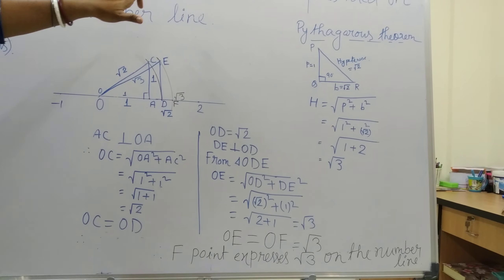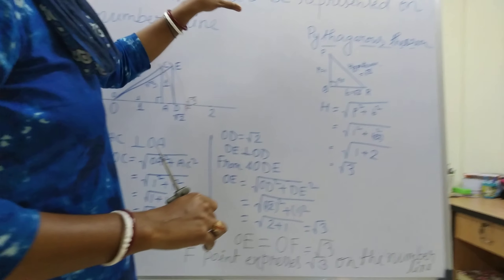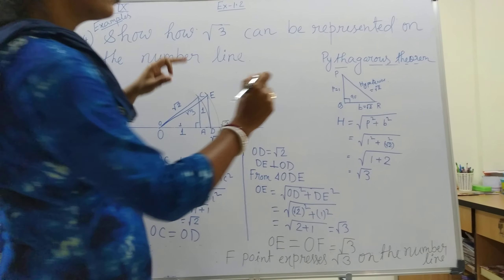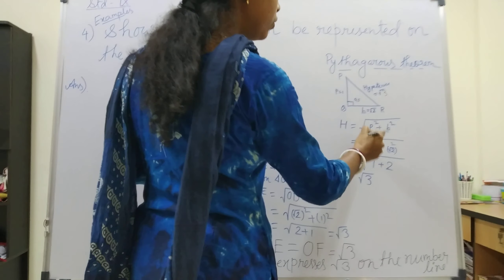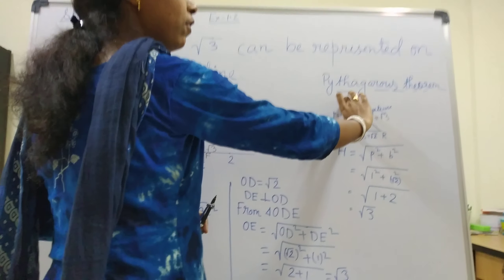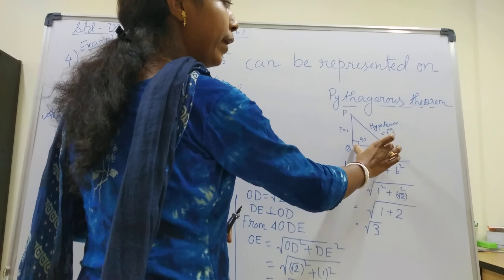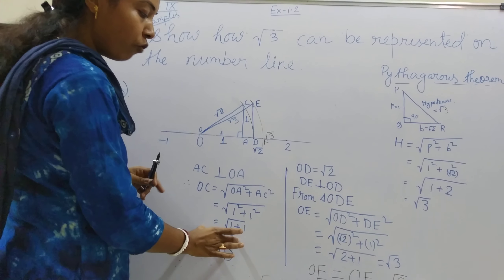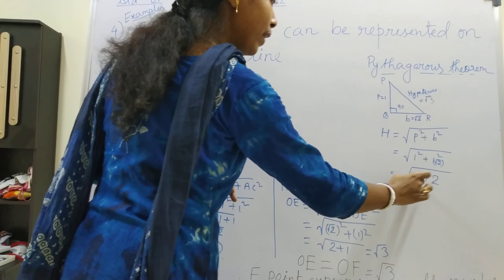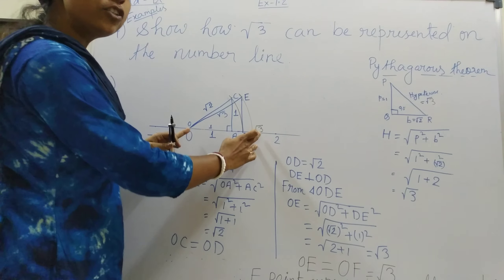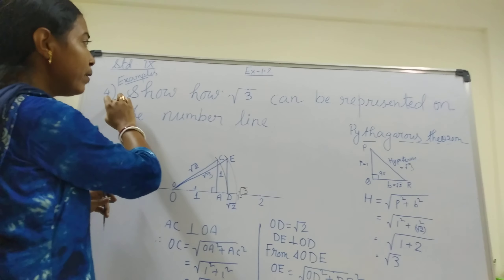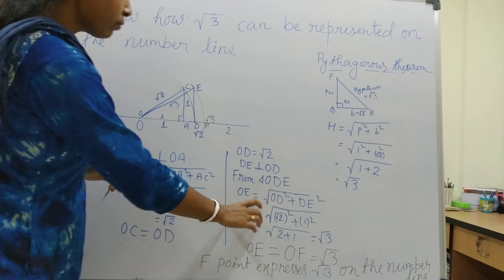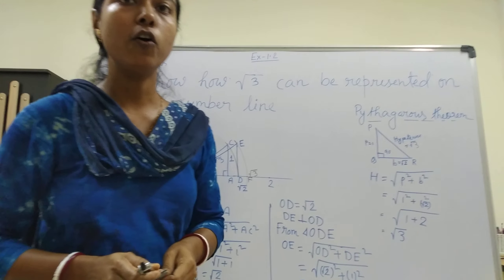So whatever number is given, first solve it using Pythagoras theorem — the given number is considered as the hypotenuse. Root 3 is given, so we need 3 = 2 + 1. Always take perpendicular height equal to 1, so base will be root 2. Remember, to find root 3 you must first find root 2 on the number line. Today, all of you practice this at your home. Thank you.